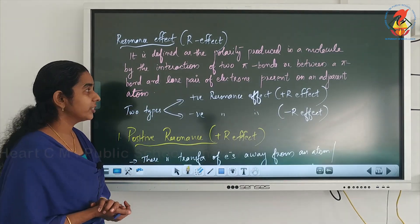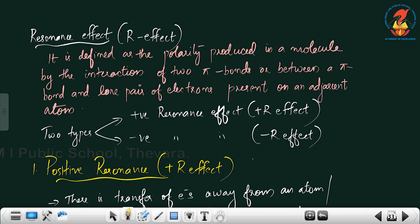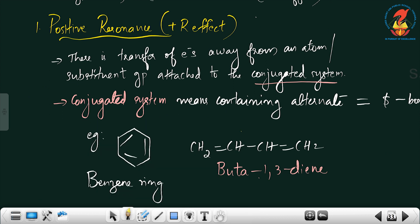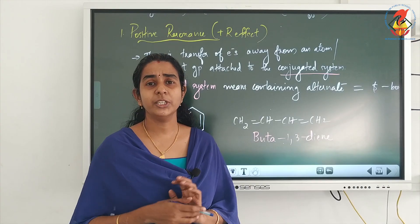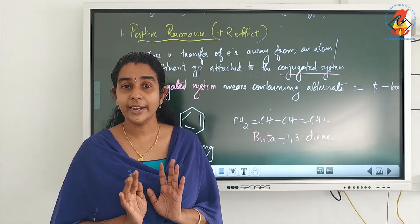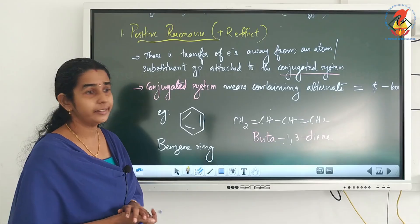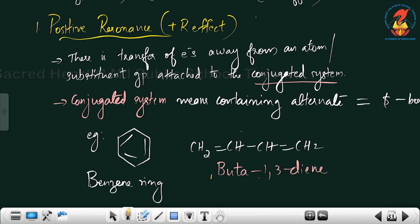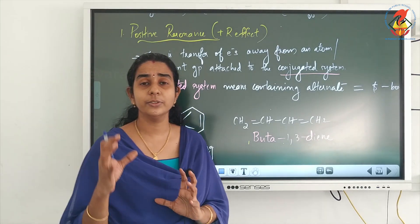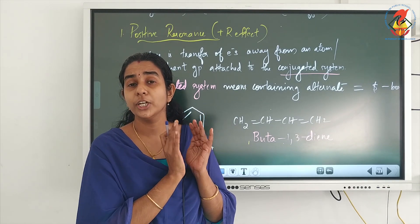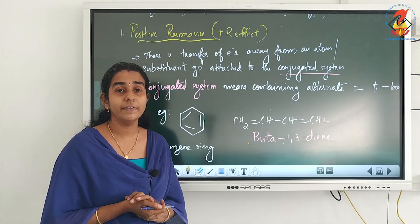There are two types of resonance effect: plus R effect or positive resonance, and minus R effect or negative resonance. These are explained based on the group present in a conjugated system. A conjugated system contains alternate double bonds, like double-single-double. The best example for a conjugated system is the benzene ring, and another one is buta-1,3-diene.